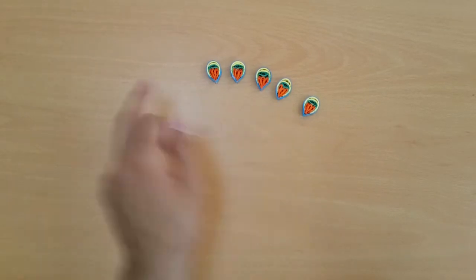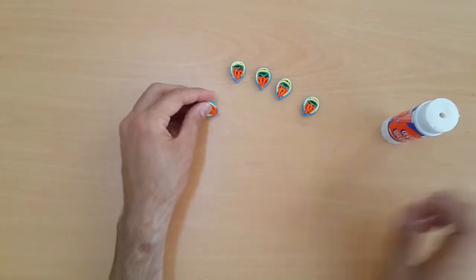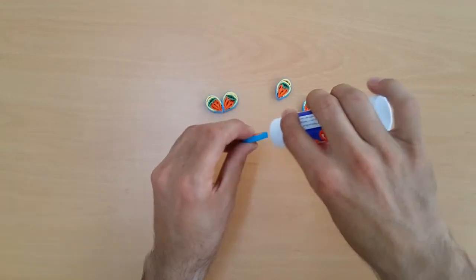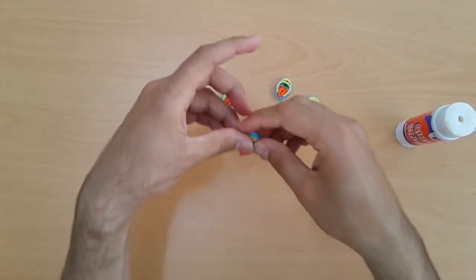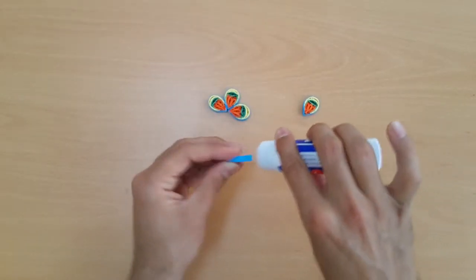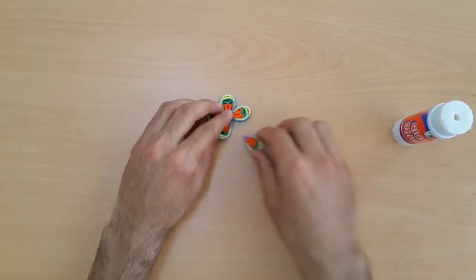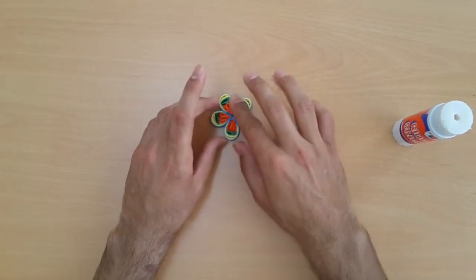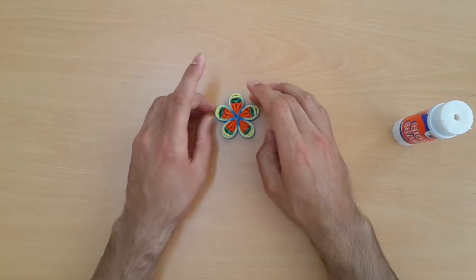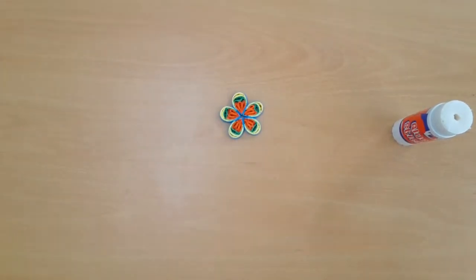Now we make five same style, same color petals. Now we will make them a flower. Now it's done. After that we will do something.